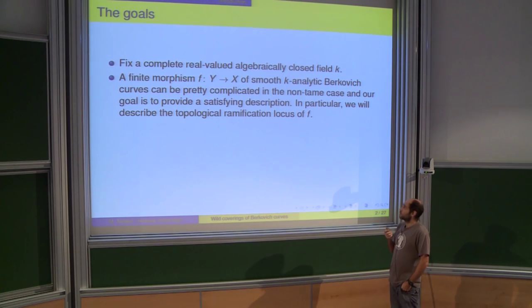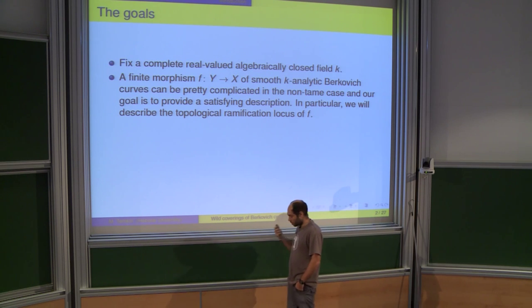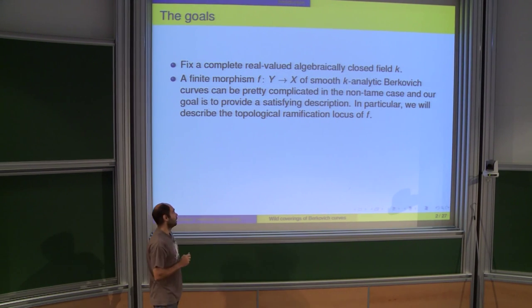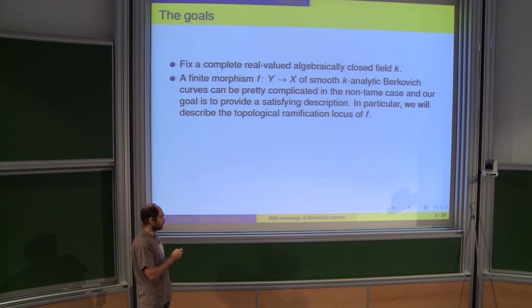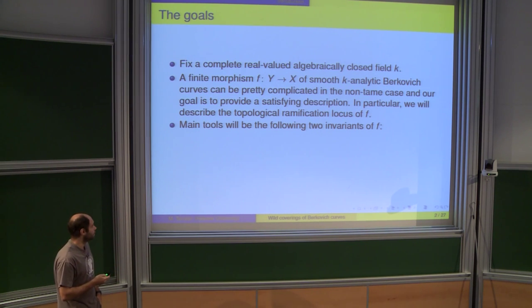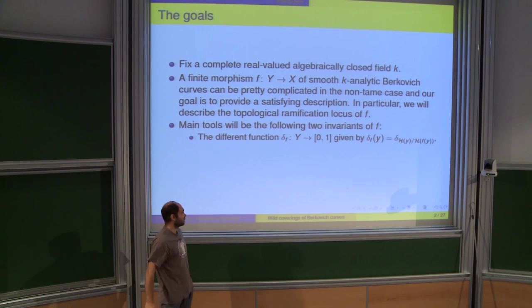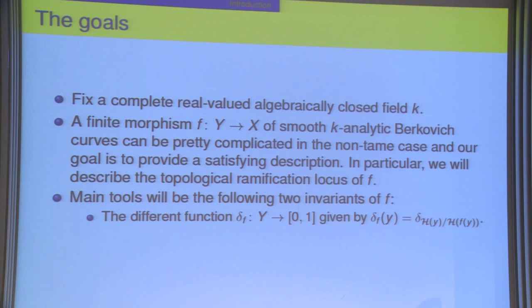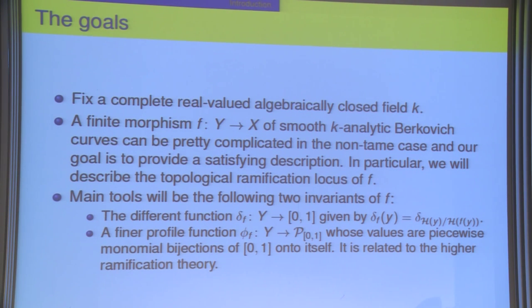One would like to give some sort of combinatorial description. For usual curves, semi-stable reduction gives a more or less best possible combinatorial description. For morphisms, there is a sort of simultaneous semi-stable reduction, but it does not describe the morphism well in the wild case, so we want finer information. The main tools are two invariants of a morphism: the different function, which computes the different of completed residue fields, and the profile function, which takes into account higher ramification theory. These will be introduced toward the end of the talk.